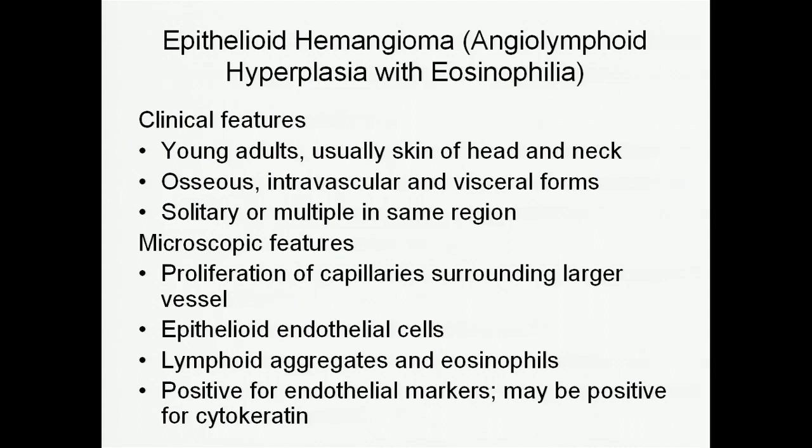Epithelioid hemangioma usually occurs in young adults and classically on the skin of the head and neck, especially behind the ear, although you can see osseous and intravascular forms as well. They tend to be solitary or multiple in the same region. In fact, it's very common for bone versions of epithelioid hemangioma to be multifocal within a given bone.